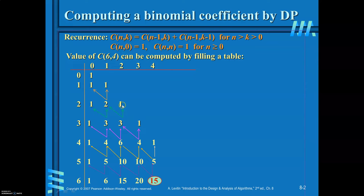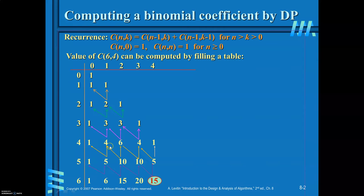For C(3,0) = 1. For C(3,1), the previous row same column is 2 and previous row previous column is 1, so 1 + 2 = 3. C(3,3) = 1. For C(4,0) = 1. C(4,1): previous row same column is 3, previous row previous column is 1, so 1 + 3 = 4. The 5th row gives: 1, 5, 10, 10, 5.